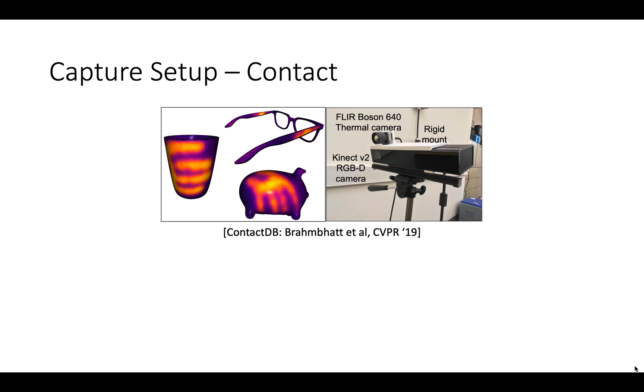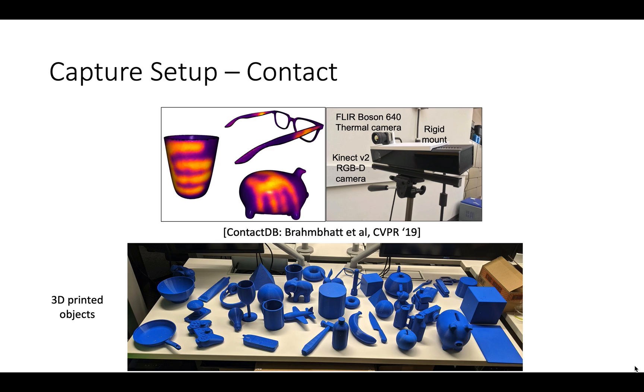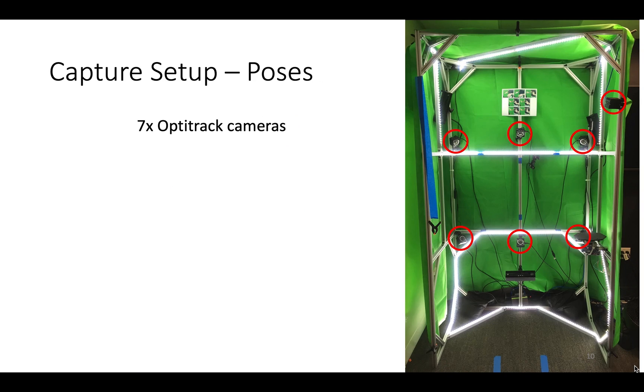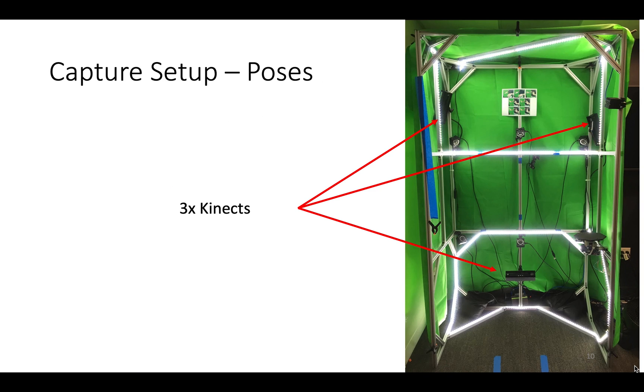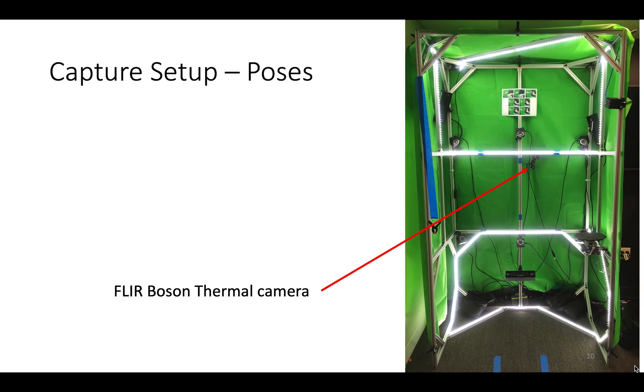To capture contact, we used the method from Brahmbhatt et al., which uses thermal imaging to observe the heat left by warm hands on the object's surface after grasping. And we used life-scale 3D printed models of household objects. An OptiTrack system tracked the object, Kinects recorded multi-view grasp images, and a FLIR thermal camera captured contact when the object was placed on a turntable after grasping.